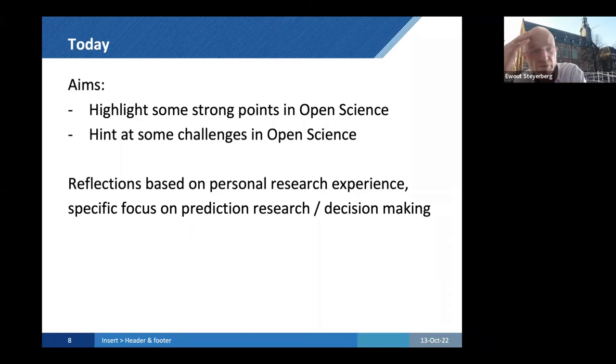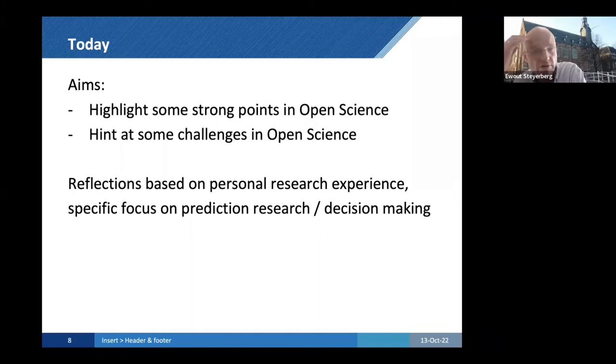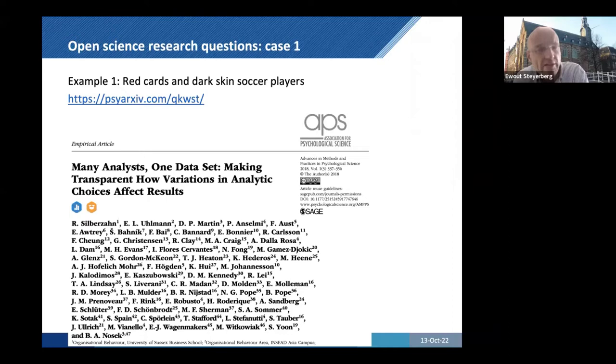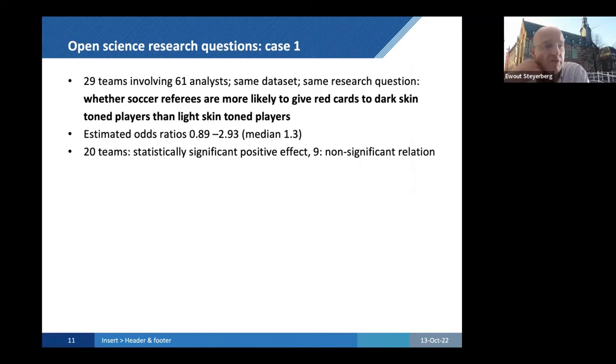Let me focus on the strong points in open science and the challenges. My focus has been on prediction research and predict outcome for patients in the hospital. One example, one data set, many analysts. This was published some years ago on a sensitive topic, whether dark skin soccer players would get a red card more often than white skin soccer players, whether there's discrimination going on.